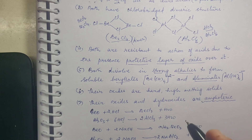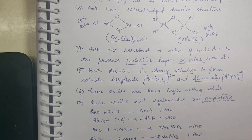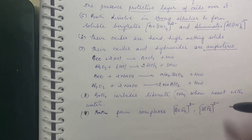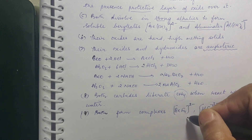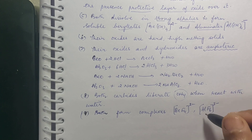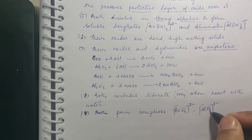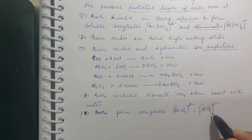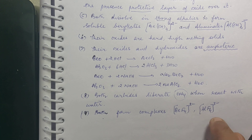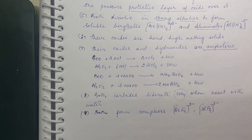Both beryllium carbide and aluminium carbide liberate methane gas when they react with water — unlike the other second group elements which form ethyne. Both beryllium and aluminium form complexes: BeF4²⁻ and AlF6³⁻. In BeF4²⁻, beryllium is attached to 4 fluorine atoms giving a coordination number of 4. In AlF6³⁻, aluminium has a coordination number of 6 because aluminium has empty d orbitals, enabling it to expand its covalency to 6. That completes the discussion on S-block elements.